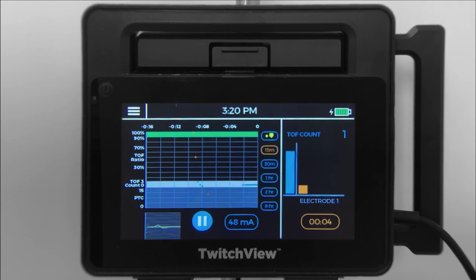Once reversal is administered, you can see patient recovery in real time. You can confirm a TRAIN-4 ratio of greater than 90% is achieved prior to extubation. A TRAIN-4 ratio of greater than 90% is indicated by the green highlight.